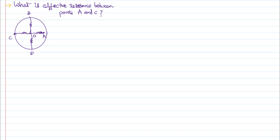We want to find the effective resistance between points A and C. Whenever we need to find an effective resistance, we always have confusion about who is in series and who is in parallel. To avoid that confusion, between the two points where you want to find the resistance, just connect an imaginary battery, because the battery needs to be there for current to flow.